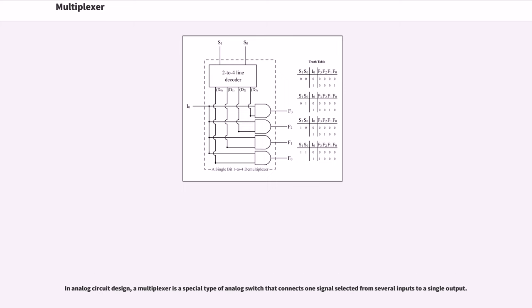In analog circuit design, a multiplexer is a special type of analog switch that connects one signal selected from several inputs to a single output.